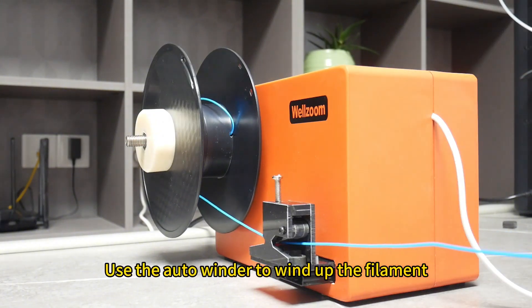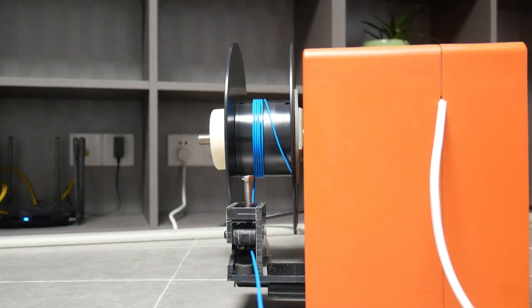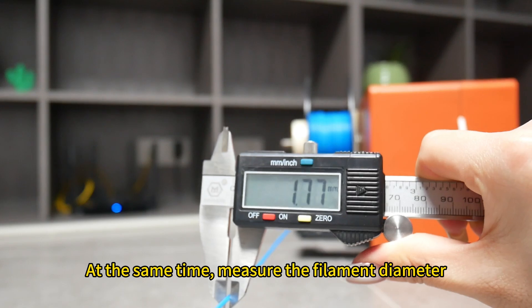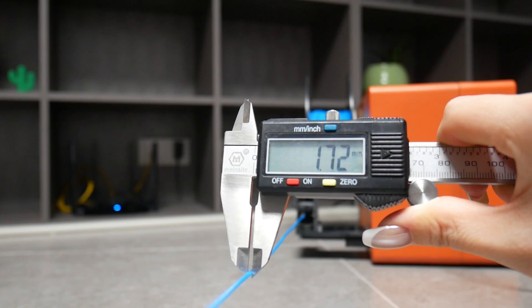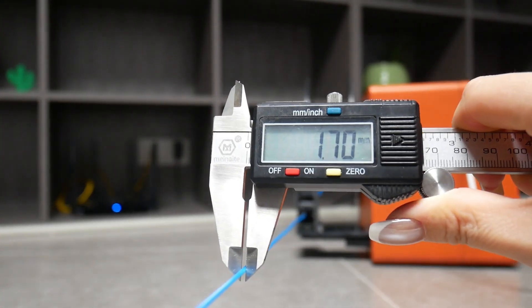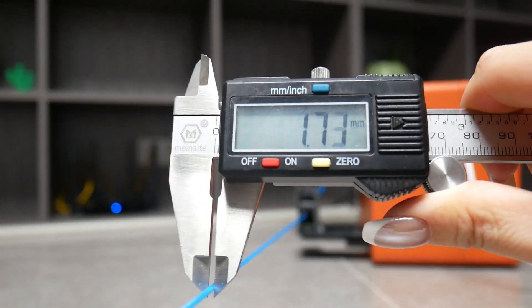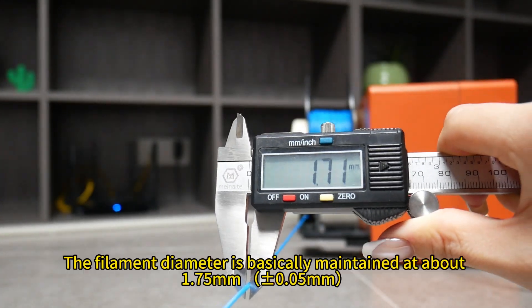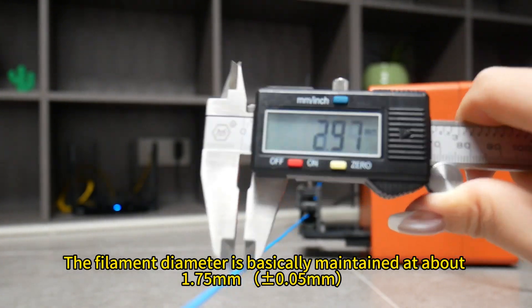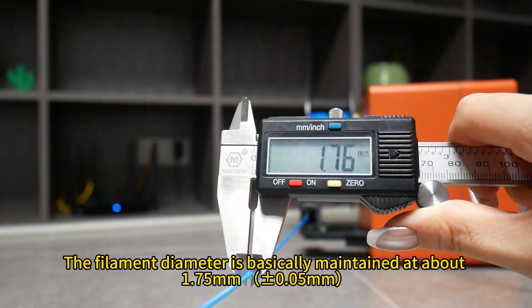Use the auto winder to wind up the filament. At the same time, measure the filament diameter. The filament diameter is basically maintained at about 1.75 mm.